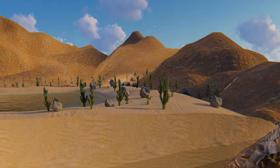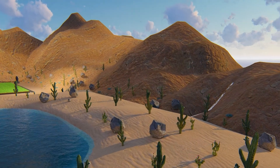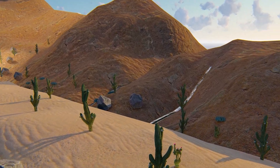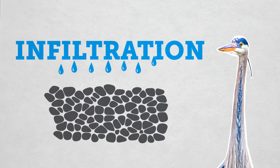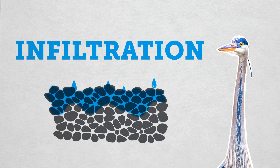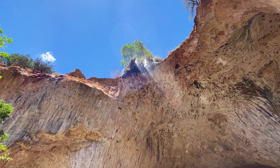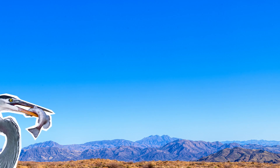In Arizona, precipitation is highest in the mountains. Down the mountain front it comes, eventually moving into the ground through stream beds — and that process is called infiltration.